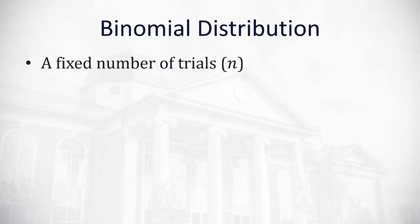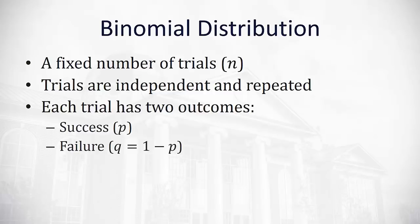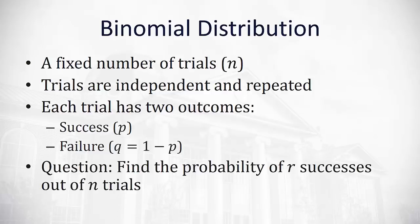A binomial distribution has a couple characteristics. First, there is a fixed number of trials — maybe we're doing 10 tests. The trials are independent and repeated over and over again, and what's really important is each trial has two outcomes. Of those 10 tests, we either were successful or we fail. We use p to represent the probability of a success and q to represent the probability of failure, which is just 1 minus p. The question we're trying to answer is to find the probability we get a certain number of successes out of a certain number of trials.